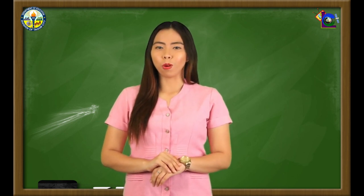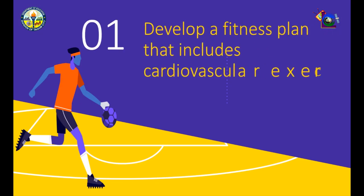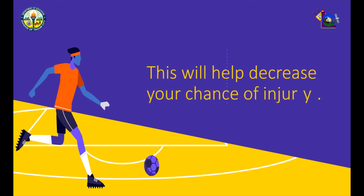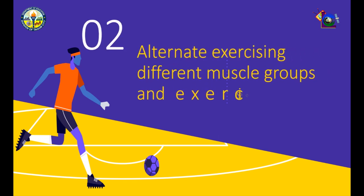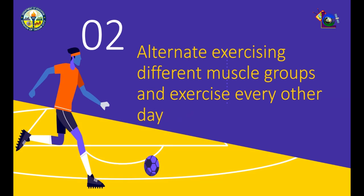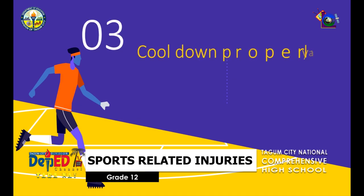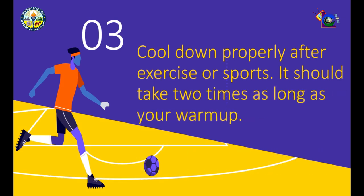So how can we prevent a sports injury? The following are some basic steps. Develop a fitness plan that includes cardiovascular exercise, strength training, and flexibility — this will help decrease your chance of injury. Alternate exercising different muscle groups and exercise every other day. Cool down properly after exercise or sports; it should take two times as long as your warm-up.